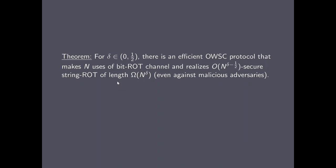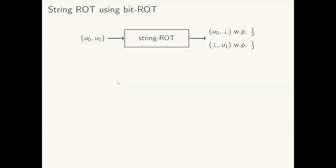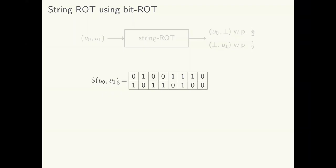Our first theorem states that there is a computationally efficient OWSC protocol that makes N uses of the bit ROT channel and realizes a string ROT of length about N to the delta, and the protocol is N to the (half minus delta) secure against a malicious adversary. This theorem establishes that string ROTs can be realized using bit ROT with inverse polynomial security. A result from Garg et al.'s 2015 paper already showed that the class of string ROTs is complete in the OWSC model. Hence, bit ROT is complete in the OWSC model with inverse polynomial error. In the coming slides, we will provide an overview of the OWSC protocol that realizes string ROT using the bit ROT channel.